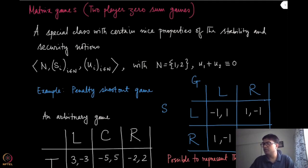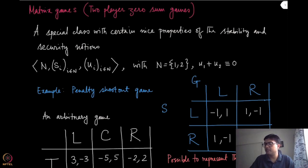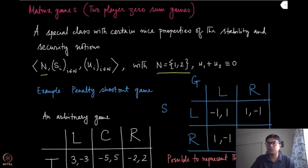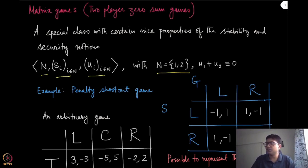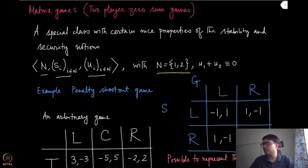As we know, games are generally represented by a tuple of three entries. The first is the player set — in this case, only two players, one and two. The second is strategy sets, which can be arbitrary even for a matrix game. The third is utilities, but utilities have a very specific structure: if you look at the utilities and add them element-wise, strategy profile by strategy profile, they will identically be equal to zero.